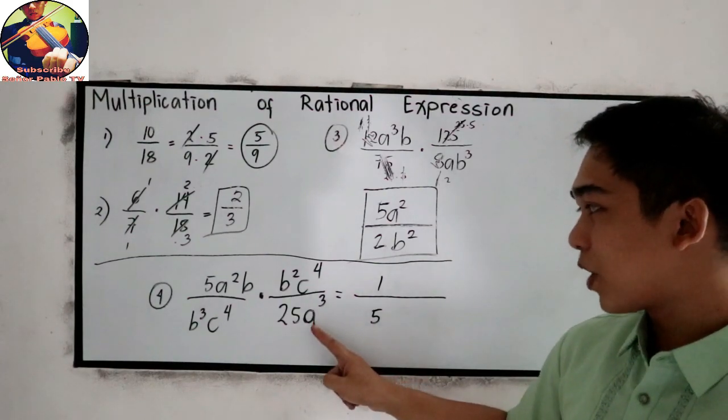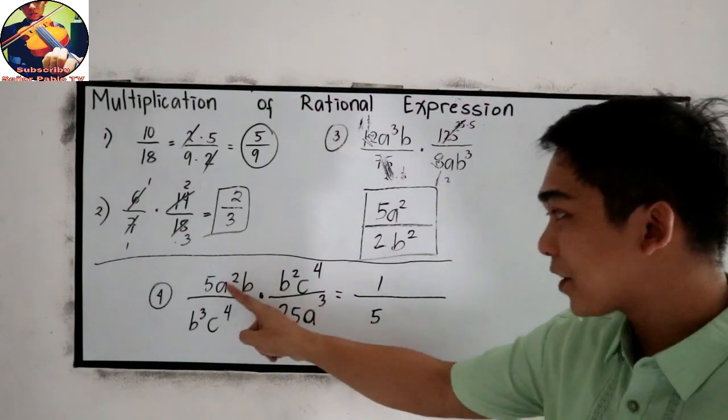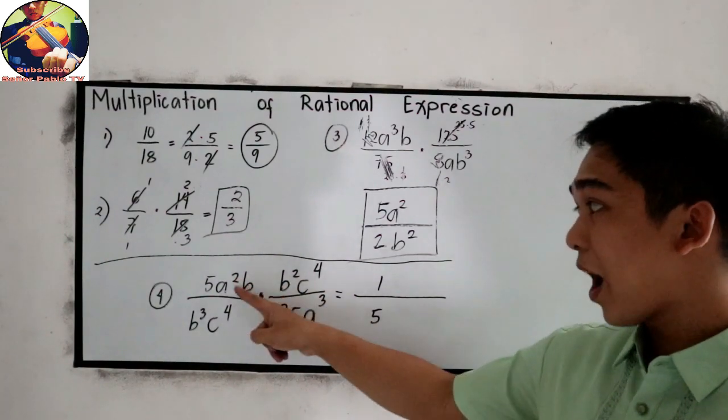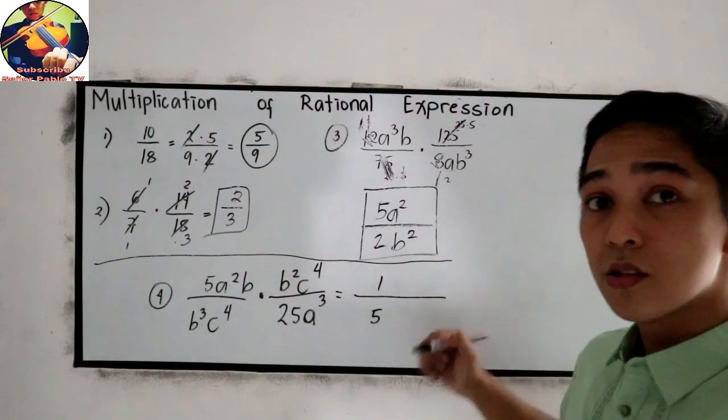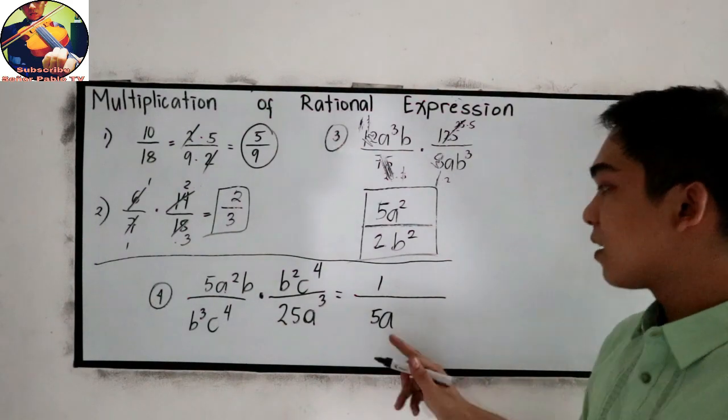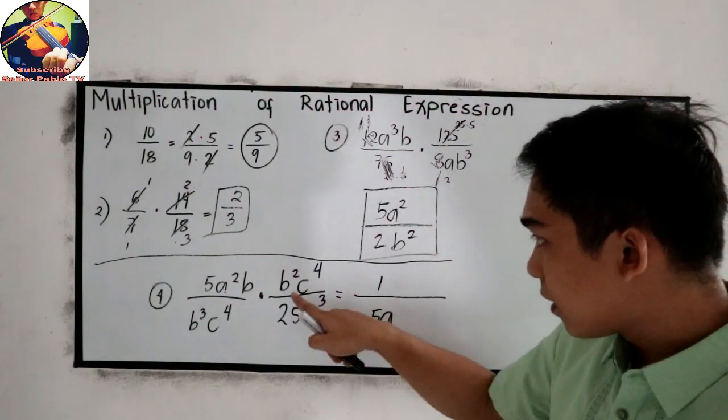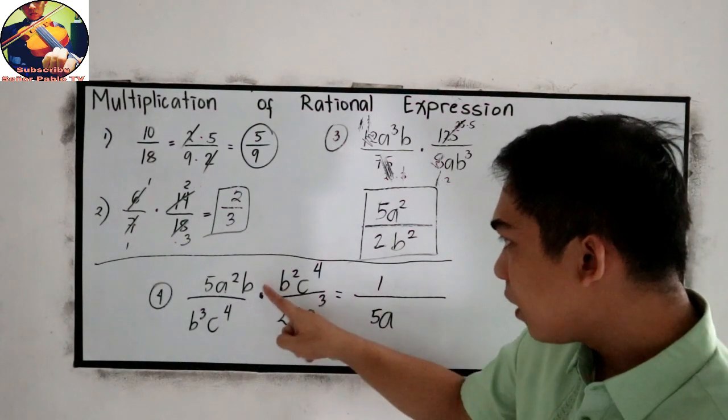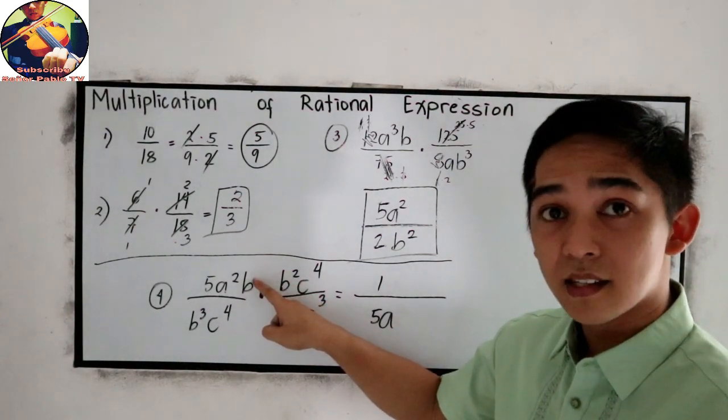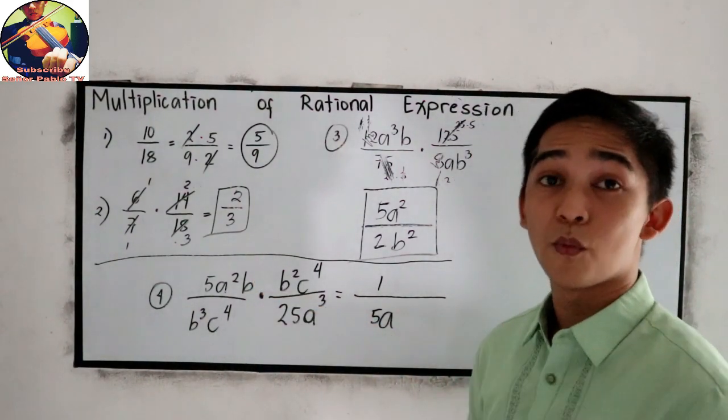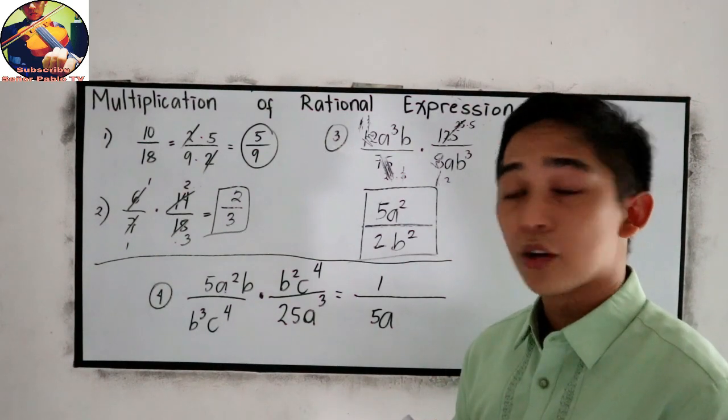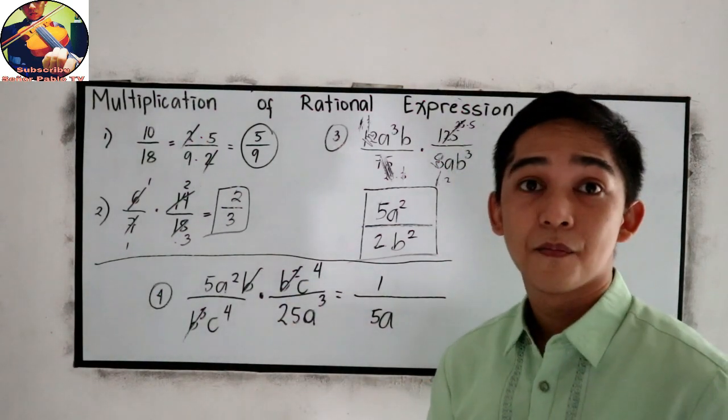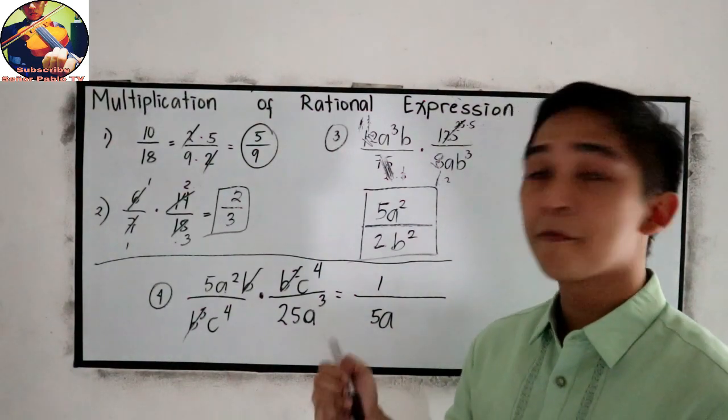Next, for our variables. For letter A, squared and cubed. Let us subtract. If we have 2 up in our numerator and 3 down, we're subtracting. We have A remaining in our denominator. For B, take a look at this one. 2 plus 1, that is 3. So 3 divided by 3 here, that will become 1. So 3 minus 3, that will become 0. Our variable B will be cancelled out because B³ over B³ is 1.